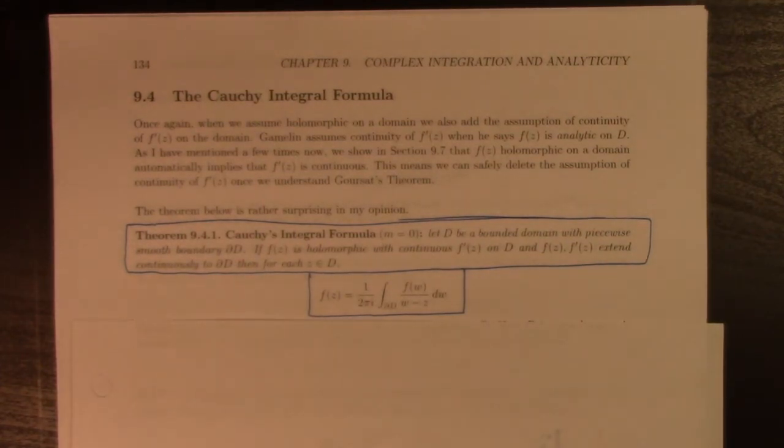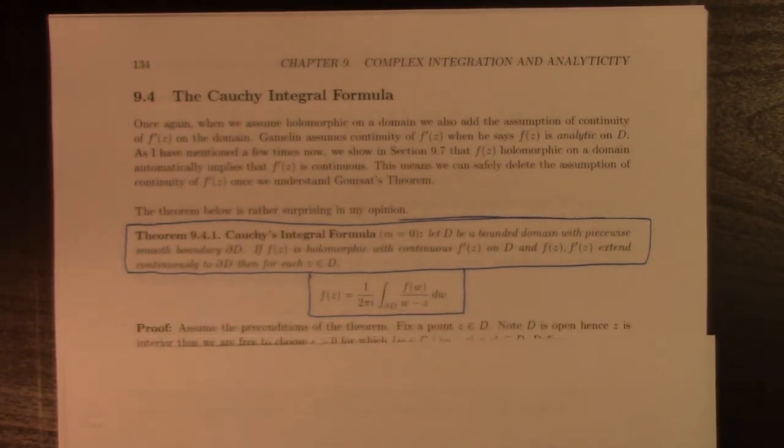It's a very kind of strange formula when you first look at it. It says a function is equal to its integral in some sense, but it's not the function itself. It's the function divided by W minus Z, so that's part of the catch. I forgot to get my picture.